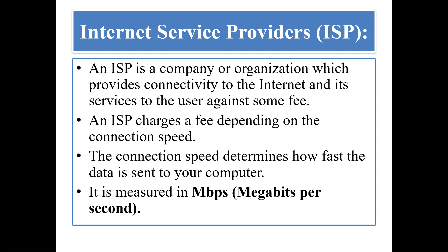Next is internet service providers — ISP. I think you all are using Airtel, Jio, or Vi — so what are these? These are ISPs. An ISP is a company or organization which provides connectivity to the internet and its services to the user for a fee. We first pay them, then they allow us to access the internet or make calls. An ISP charges a fee depending on the connection speed. Connection speed determines how fast data is sent to your computer, and it is measured in MBPS — megabits per second.